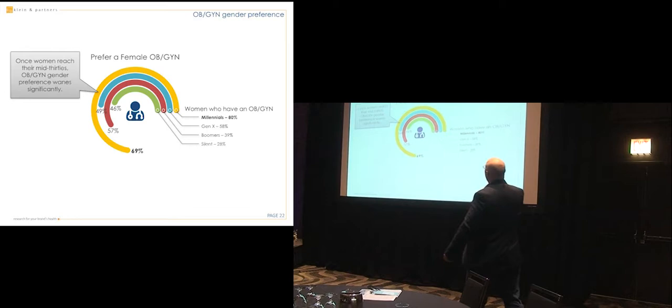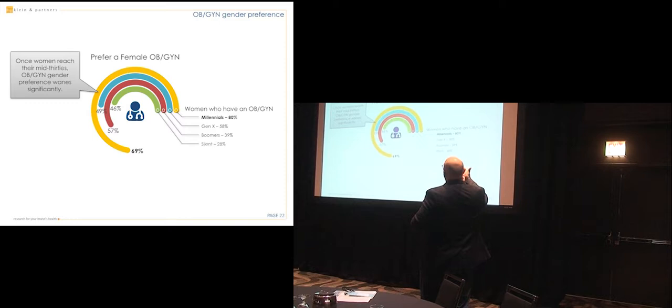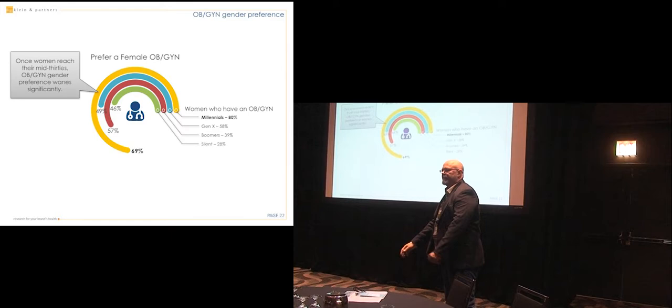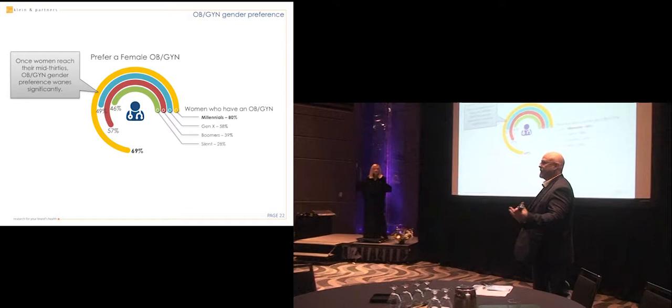So, and again, some of these are random, so they're just things that people were interested in my, of my clients. Having a female OB-GYN. Millennial women, 80%, have an OB, and 69% of them say they want a female. But that drops off into their mid-30s. But if you've got a lot of millennials, the gender of your physicians matters. Next.